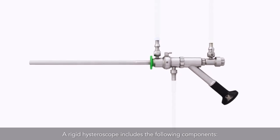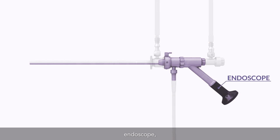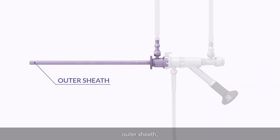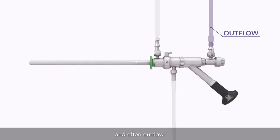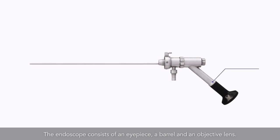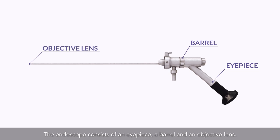A rigid hysteroscope includes the following components: endoscope, outer sheath, light source, inflow, and often outflow. The endoscope consists of an eyepiece, a barrel, and an objective lens.